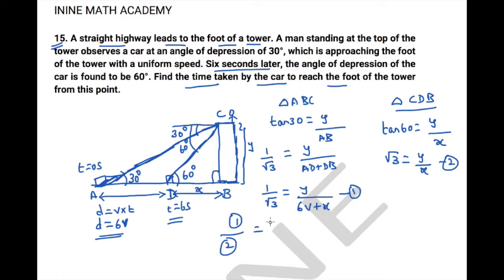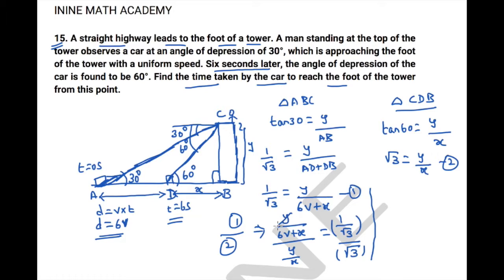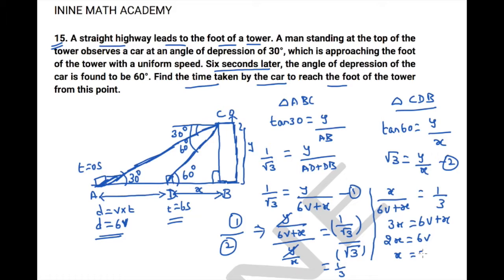Now let us take equation 1 divided by equation 2 so that we can eliminate y easily. So (1/√3) / √3 = (y / (6v + x)) / (y / x). The y's cancel out, giving (1/3) = x / (6v + x). Therefore 3x = 6v + x, which gives 2x = 6v, or x = 3v.